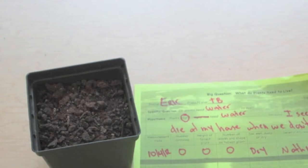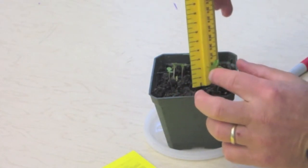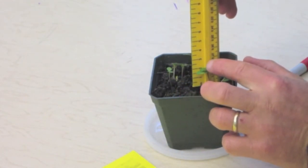Observe the inside of your pot to see if anything has grown. If anything has grown, use a ruler to measure how tall it is. You will measure in centimeters.